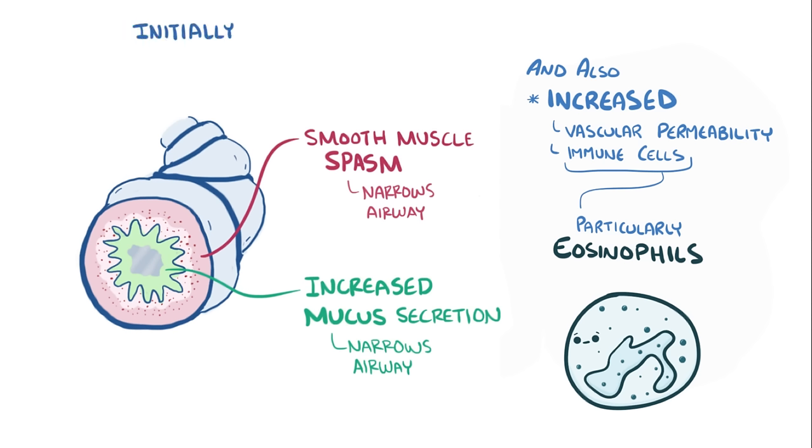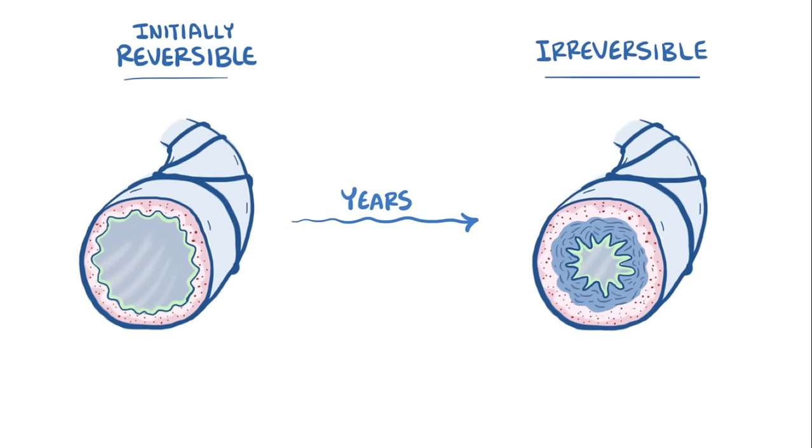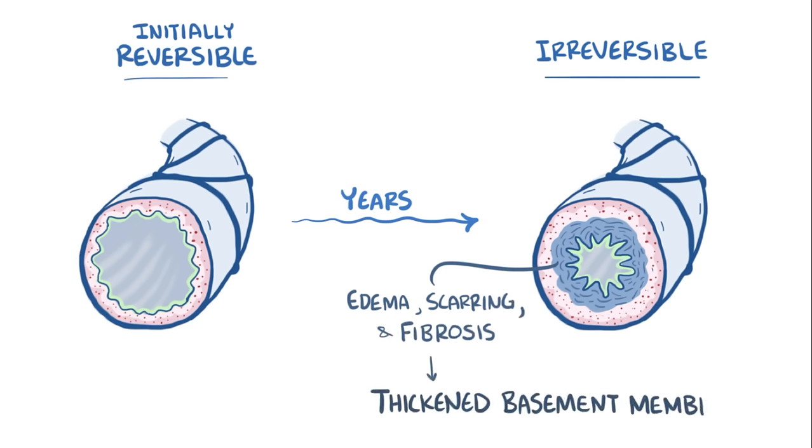Initially, these inflammatory changes are completely reversible, but over the years irreversible changes start to take place. Edema, scarring, and fibrosis build up, leading to thickening of the epithelial basement membrane, which permanently reduces the airway diameter.